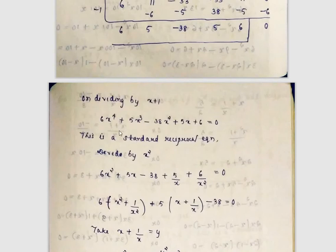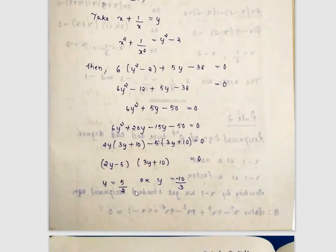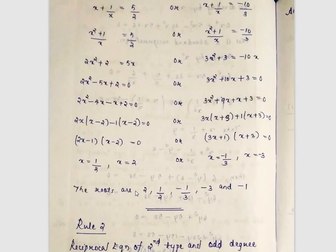Now this is the standard reciprocal equation. We divide by x² and set y = x + 1/x. Then x² + 1/x² = y² - 2. Substituting these values, we convert the equation in x into a quadratic in y, find y values, and then solve for x using x + 1/x = y.